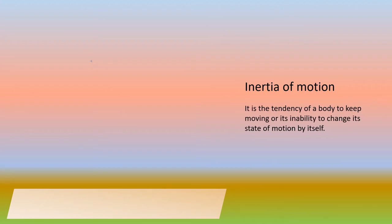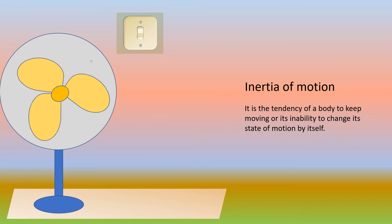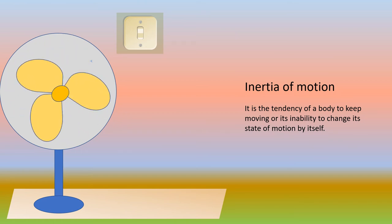Now we know what is inertia of motion. Let's have another example. When you switch off the fan, the fan doesn't stop all of a sudden — it rotates a bit more and then stops. This is an example of inertia of motion.